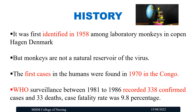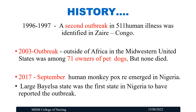Let's see about the history of monkeypox. It was first identified in 1958 among laboratory monkeys in Copenhagen, Denmark. But monkeys are not a natural reservoir of this virus. The first cases in humans were found in 1970 in the Congo. WHO surveillance between 1981 to 1986 recorded 338 confirmed cases and 33 deaths due to monkeypox, and the case fatality rate was 9.8%.